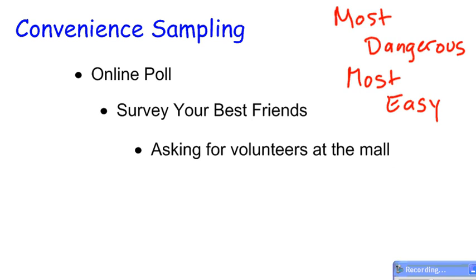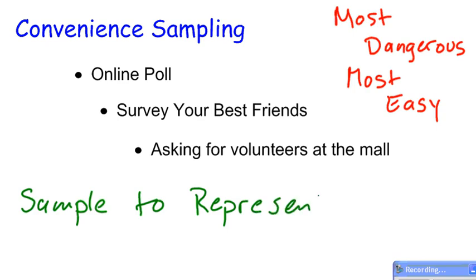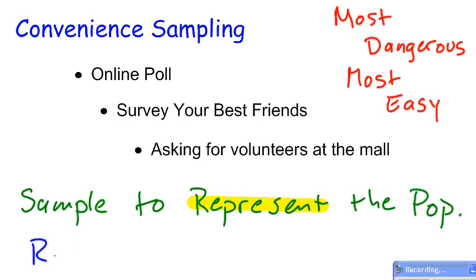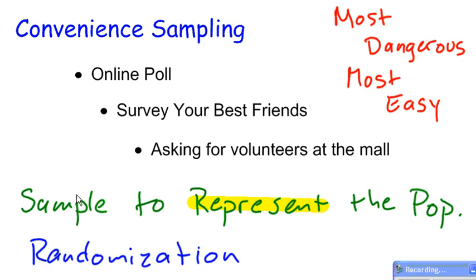The reason that convenience sampling is dangerous is because when we collect a sample, we want the sample to represent the population. That's the purpose of collecting a sample. And one of the things that helps the sample represent the population is randomization. We want to randomize things in order to get a good representation of the population, so that our sample gives us a good representation of the population.